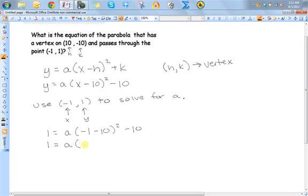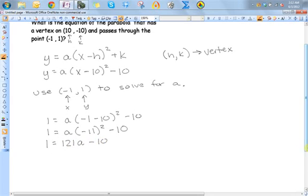Okay, so 1 = a(-11)² - 10. So 1 = (-11)² is positive 121a - 10.